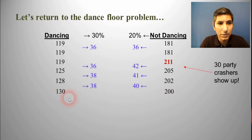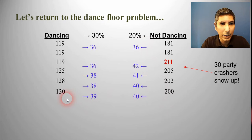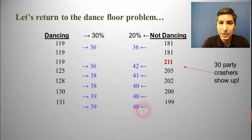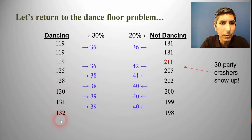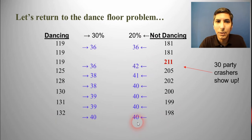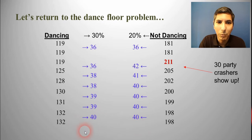We can do this again: 30% of 130 is 39, and 20% of 200 is 40. So we have a net change of plus 1 in the direction of the dance floor — this goes to 131, and the not dancing side goes down to 199. And again: 30% of 131 is 39, and 20% of 199 is 40 — once again a plus 1 in the direction of the dance floor. Now watch: 30% of 132 gives us 40, and 20% of 198 is 40. We are back at dance floor equilibrium with a net change of 0 — it's 132 and 198.